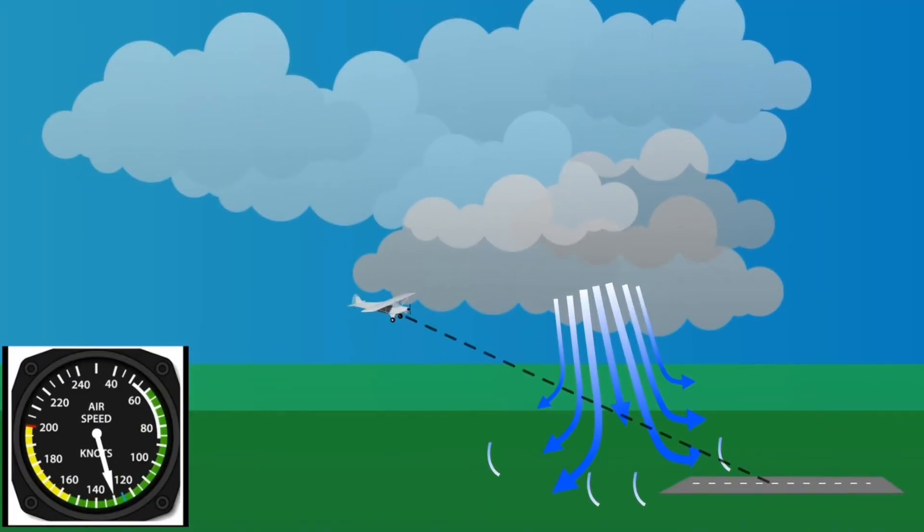You would experience this as initially an increase in indicated airspeed and climb above the glide slope, followed by being pushed back down to glide slope or below when you're in the downdrafts, before finally seeing a decrease in indicated airspeed due to the tailwinds and a descent further below the glide slope, as we see here in this animation.